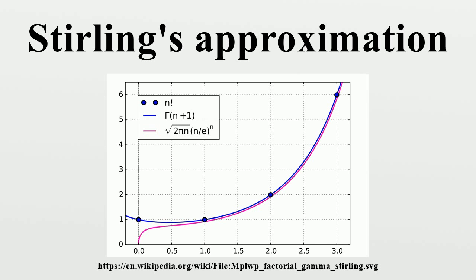Derivation: The formula, together with precise estimates of its error, can be derived as follows. Instead of approximating n!, one considers its natural logarithm, as this is a slowly varying function. The right-hand side of this equation minus the approximation by the trapezoid rule of the integral, and the error in this approximation is given by the Euler-Maclaurin formula.